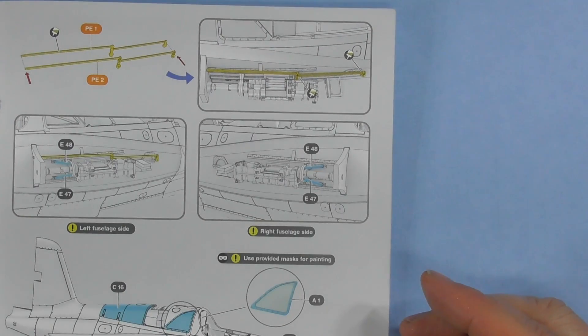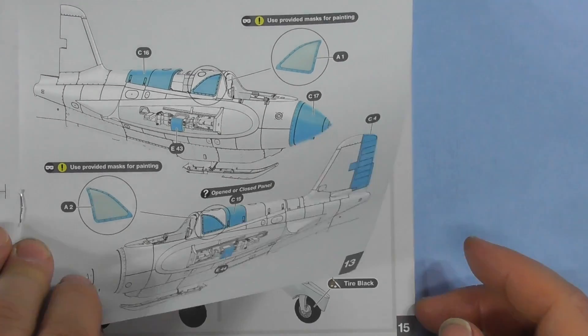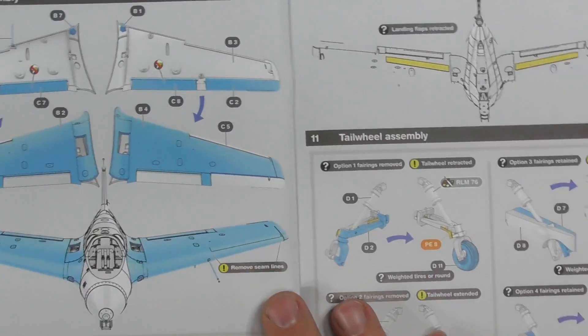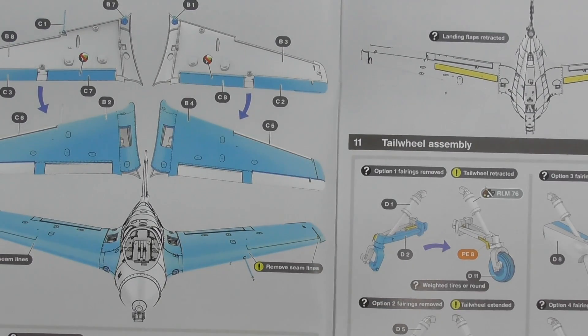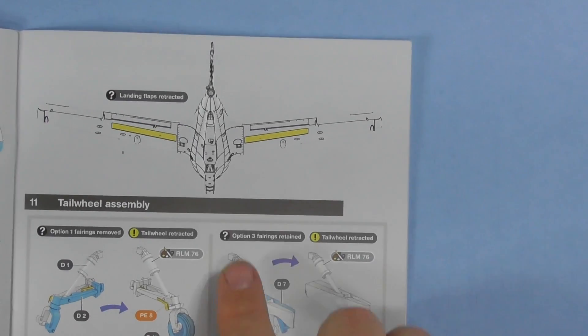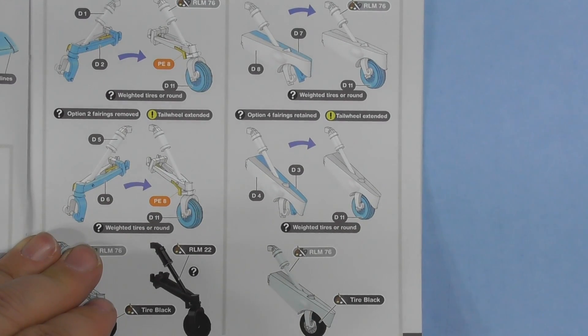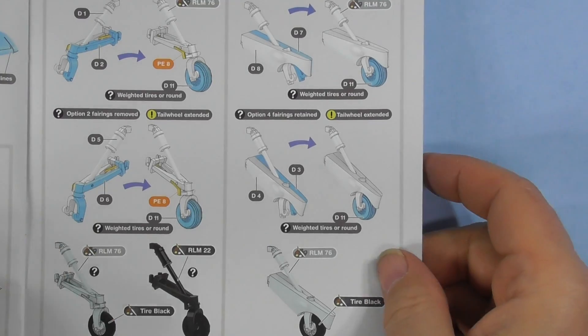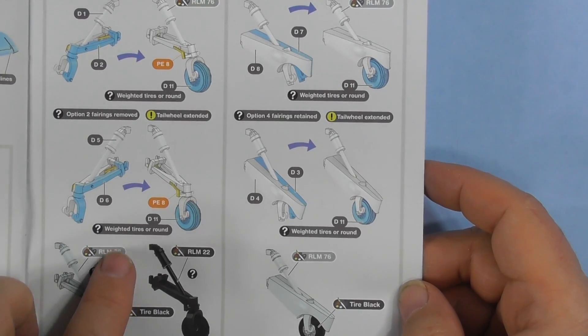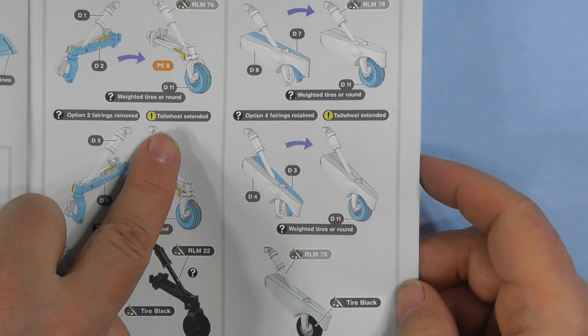And there's some more PE there for looks like it's going along the machine gun bay. Use your mask provided again for the side windows. Very detailed instructions. Remove more seam lines. Landing flaps extended, landing flaps retracted. Here's your tail wheel and its assembly, and you're painting when it's done. And weighted tires are round, so it comes with both. You just have to decide.